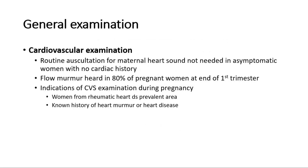We start off with a general examination, for example cardiovascular examination. Routine auscultation for the maternal heart is not needed if the woman does not have any symptoms and there is no cardiac history. At the end of the first trimester, 80% of pregnant women will have a flow murmur heard. Indications to examine the cardiovascular system during pregnancy include if the woman comes from a rheumatic heart disease prevalent area, or has a known history of heart murmur or any heart disease.